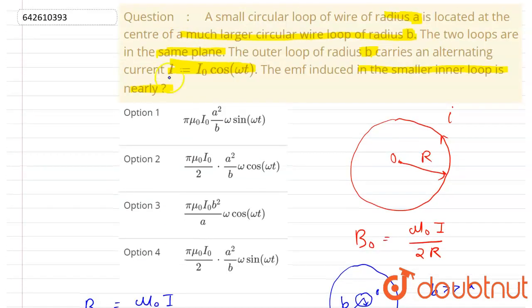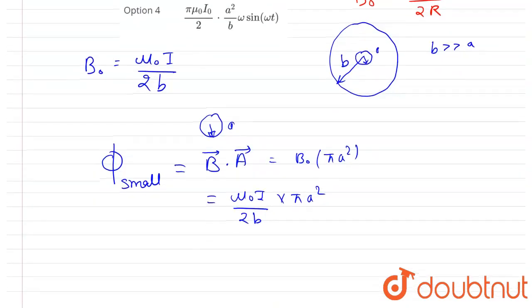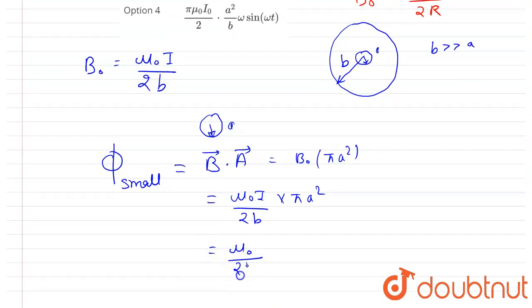Now, if you see in the question, the I is alternating. I is I naught cos omega t. So I will put the value of I here. So I will write, I will take the constant outside. So these all are constant. And I is I naught cos omega t.